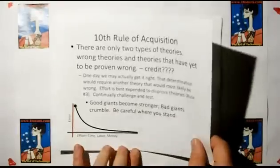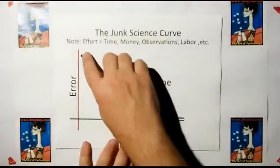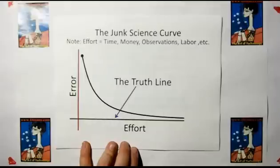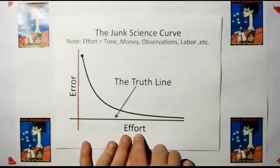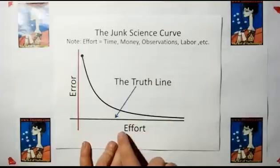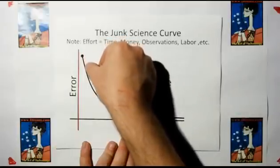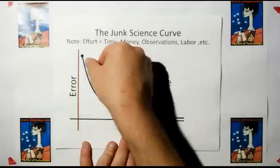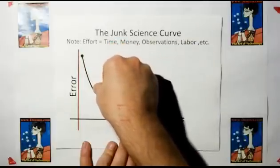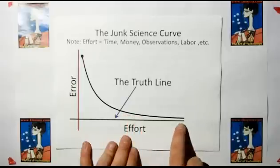Let me introduce you to the junk science curve, which is this little curve down here. Whenever we come up with a new theory, it's most ultimately going to be wrong. As we make more and more observations — effort is observations, labor, money, and time — the more effort we spend and the newer observations we make, we can start reducing the error. As we get newer and newer models, they explain more and more, and their error becomes less and less. We may never, ever get to the truth line. We should never assume we're going to get there.